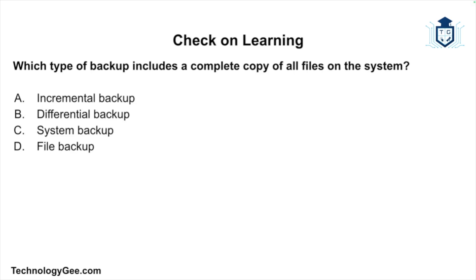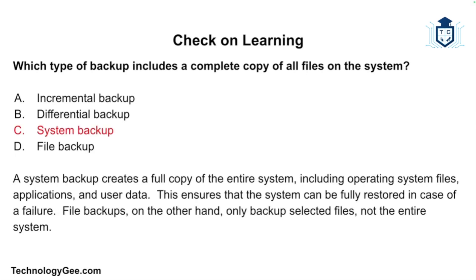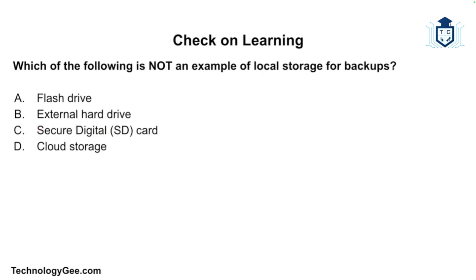Question one: which type of backup includes a complete copy of all files on the system? Is it an incremental backup, a differential backup, a system backup, or a file backup? The correct answer is a system backup. A system backup creates a full copy of the entire system including the operating system, files, and applications, ensuring the system can be fully restored in case of a failure. File backups, on the other hand, only back up selected files and not the entire system.